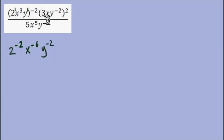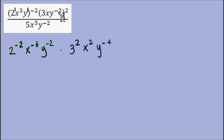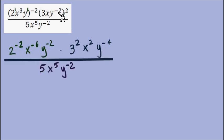Now I have an exponent of positive 2 to work in. This will be 3 to the power of 2, then x to the power of 2, and y with exponent of negative 4. This is all in the numerator — it is important that we keep numerator and denominator clear. I've just rewritten the denominator because there was no exponent outside of parentheses to work in, taking my time with these steps, doing one thing at a time.